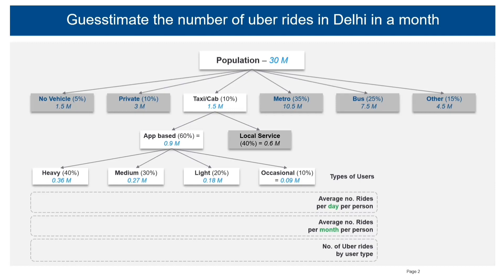For the average number of rides per day per person: for the heavy user category I've assumed 2 rides per day, for medium category 1 ride per day, and for the light category half a ride per day — basically, light users use the cab service once every two or three days.